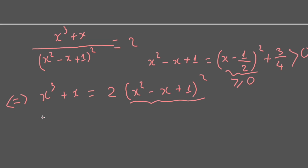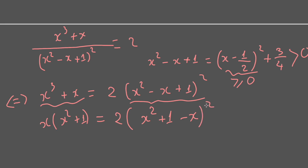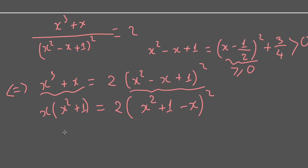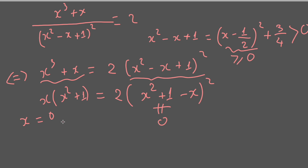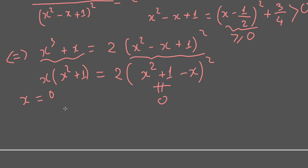We recognize that we can factor the numerator by x and (x² + 1). On the right side we have (x² + 1 - x)². We consider dividing both sides of the equation by x. First we check whether x = 0 is a solution — if x = 0, the left side differs from the right side, so x = 0 is not a solution. Therefore we can divide both sides by x.